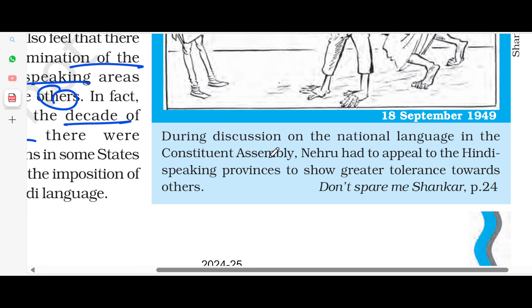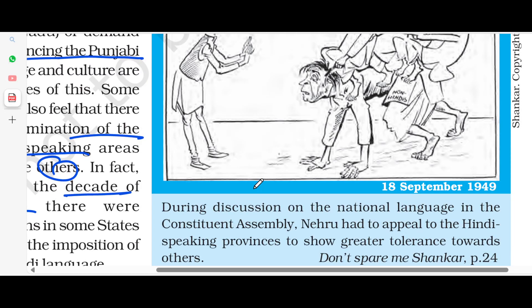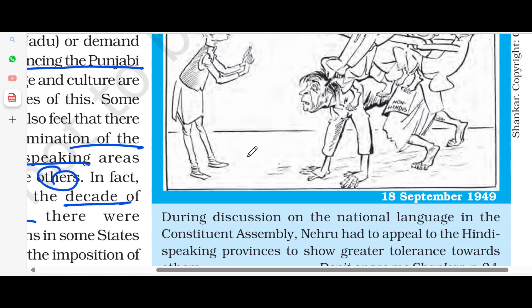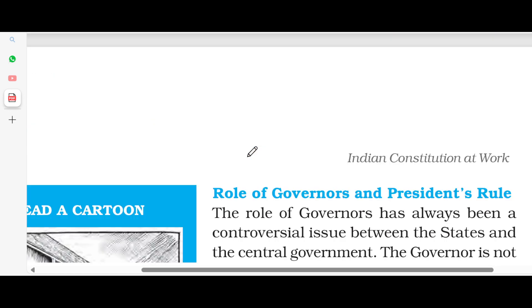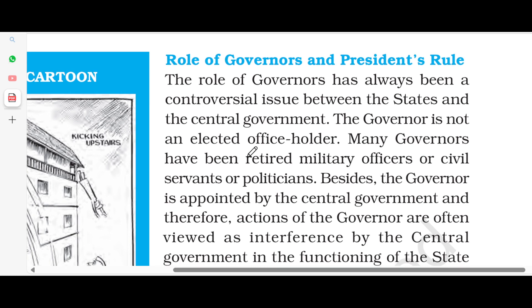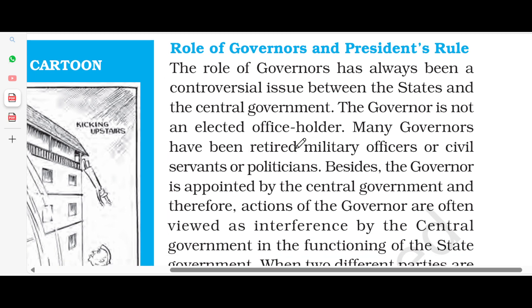During discussions on the national language in the Constituent Assembly, Nehru had to appeal to the Hindi-speaking provinces to show greater tolerance towards others. Now, if we talk about the governor's role, the governor's role has always been a controversial issue under the states and under the central government.